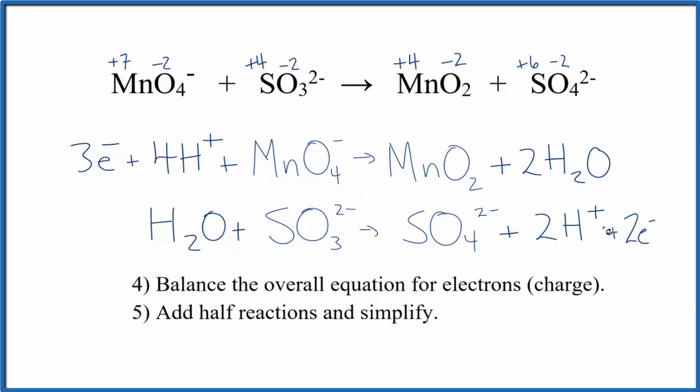So what we could do is if we multiplied everything here by two, that doesn't change the ratio, but now we have six electrons. And everything here by three, we'd have three times two. We'd have six electrons in the products. Six in the reactants. Charge would be balanced.